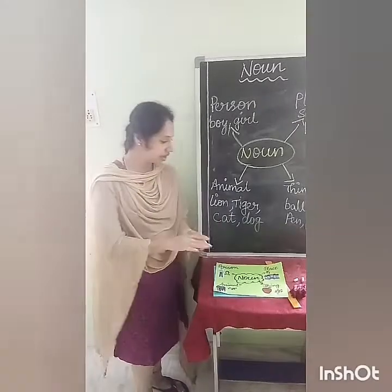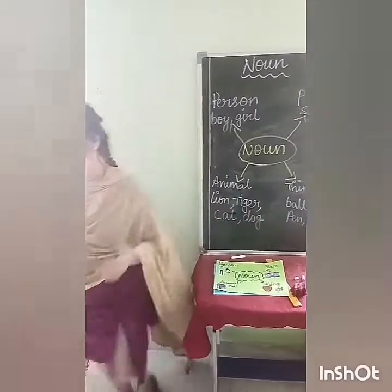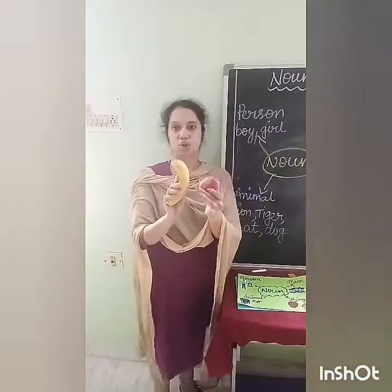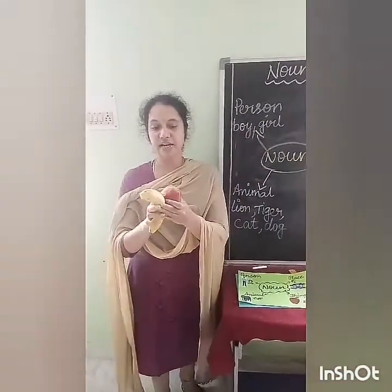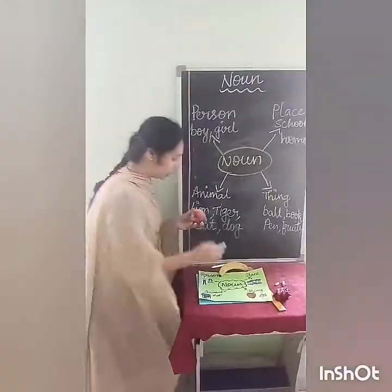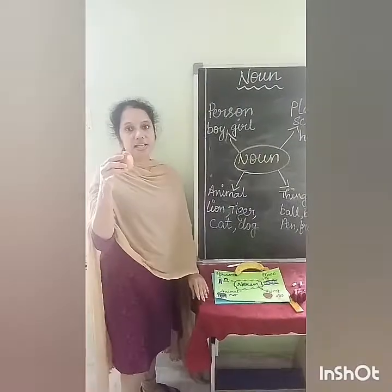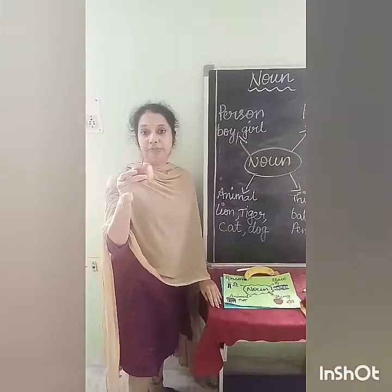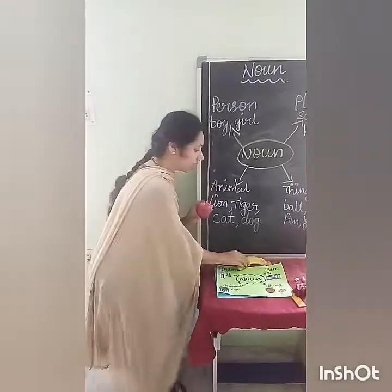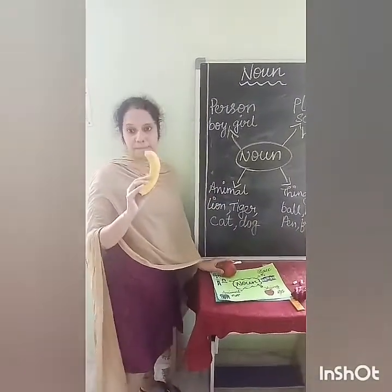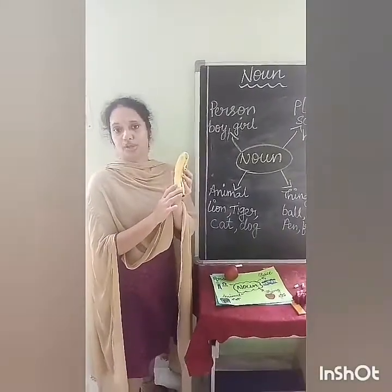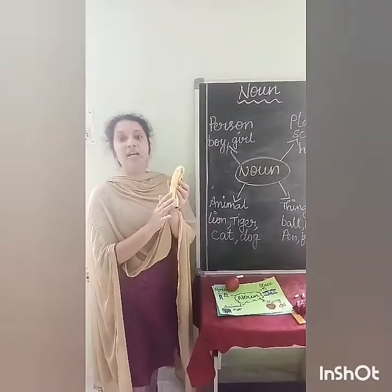Common nouns means — see here, for example: what are these fruits? These are fruits — commonly we are telling fruits. Now I am telling about this one specifically. What is this? Apple. Means I am giving a name for this fruit — apple is a proper noun. And next to this, what is this? Banana. I am telling the name of the fruit — banana.